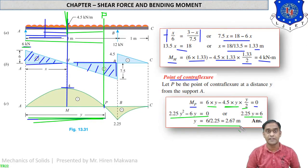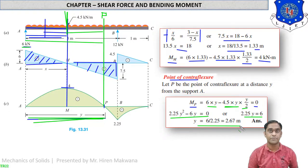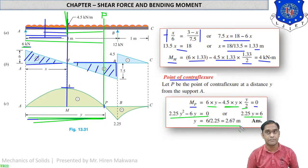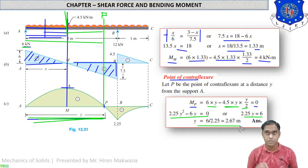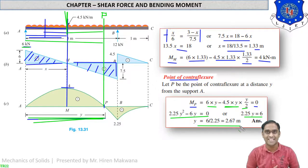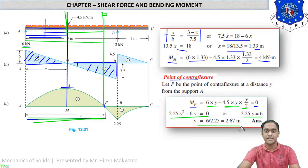This is the numerical based on point of contraflexure, which is our last method. Practice this type of numerical on your own and you will understand the fundamentals. More examples are available in your Atul publication textbook, and this chapter is very demanding in terms of calculations, so practice your calculator skills at home. Let us close the chapter here. Practice well and we will meet in the next lecture on Monday morning with the next chapter. Thank you very much and goodbye.